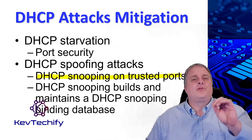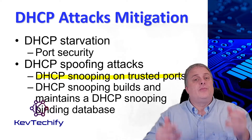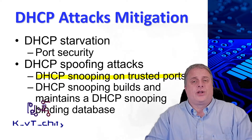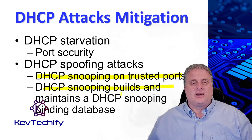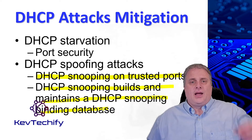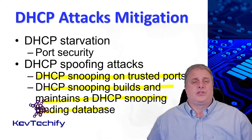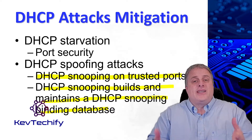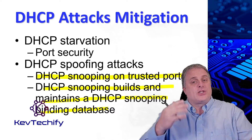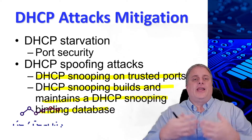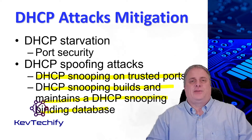DHCP snooping also helps mitigate DHCP starvation attacks by rate limiting the number of DHCP discovery messages that an untrusted port can receive. DHCP snooping builds and maintains a DHCP snooping binding database, and the switch uses this to filter out DHCP messages that come from untrusted sources. When DHCP snooping is enabled on an interface or VLAN and a switch receives a packet on an untrusted port, it compares the source packet information with the DHCP snooping binding table, then denies packets containing invalid information.